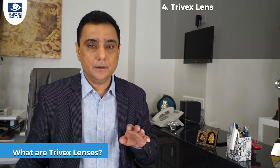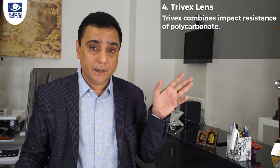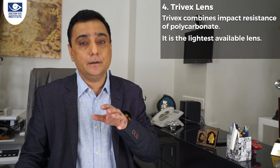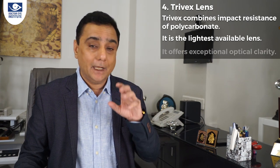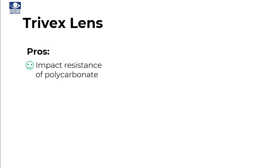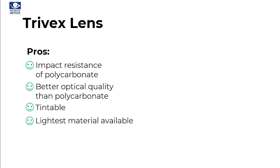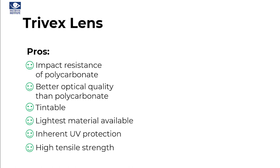The fourth material is called Trivex. The big advantage is it combines the good properties of polycarbonate while being very light, and its optical quality is even better than polycarbonate. Pros: impact resistant like polycarbonate, better optical quality than polycarbonate, tintable, the lightest material on the market, inherent UV protection, and high tensile strength — making it ideal for drill-mount frames where a small hole is drilled in the lens to mount the frame.